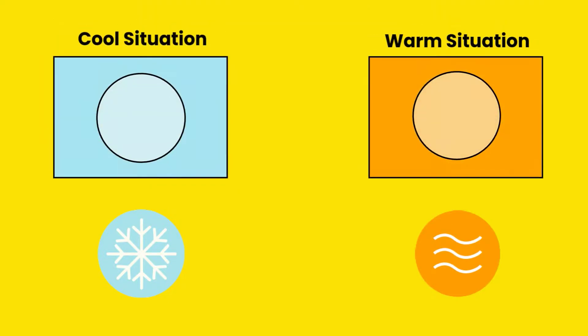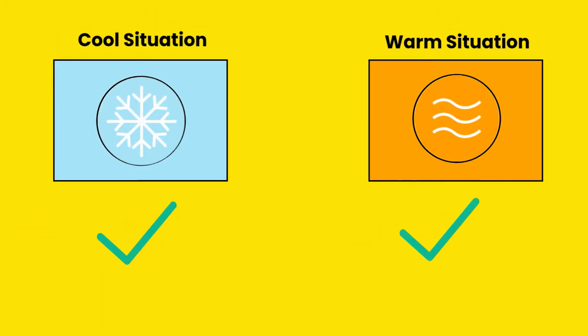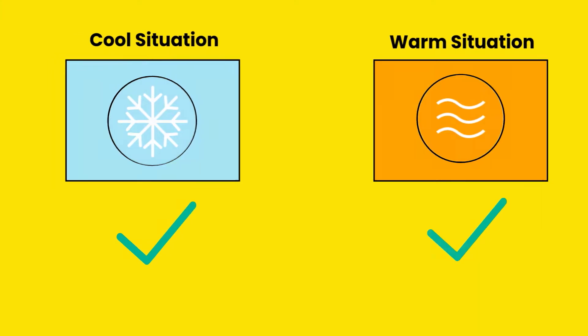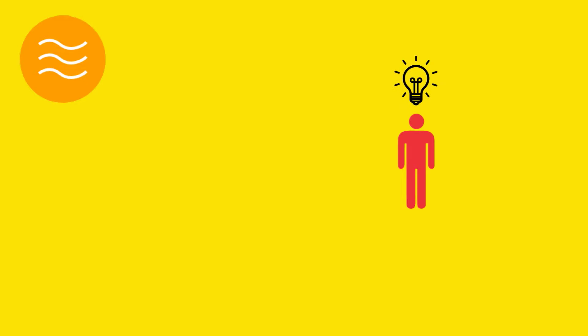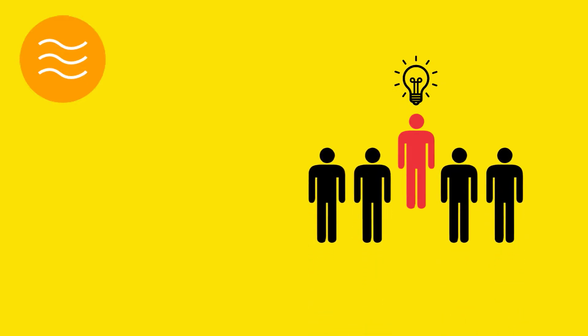Knowing when to use the warm or cool variant of an influencing strategy is important, as each will be effective in different situations. For example, warm stabilizing is required in contexts where an individual's ability to make decisions is tempered by the necessity for people to feel included in the decision-making process.